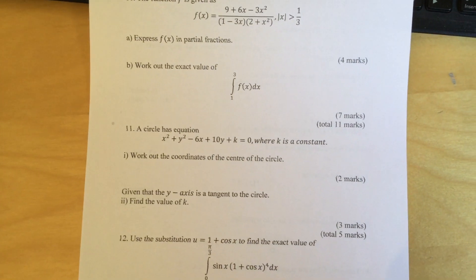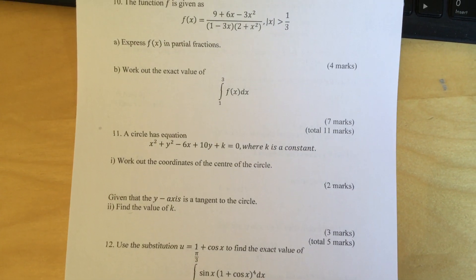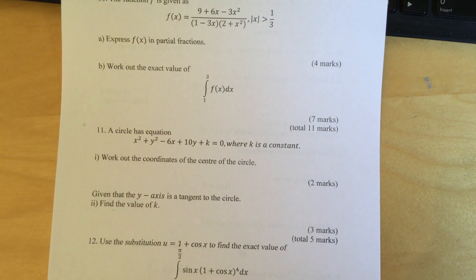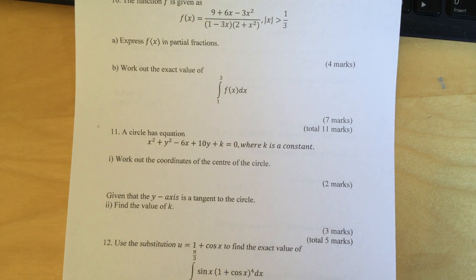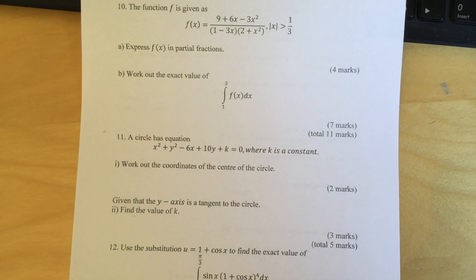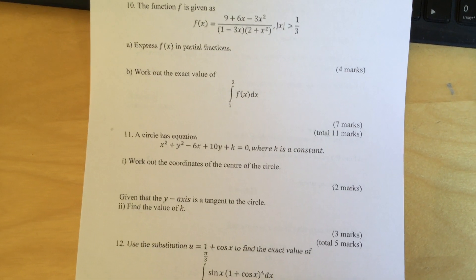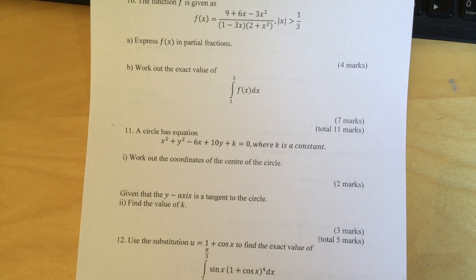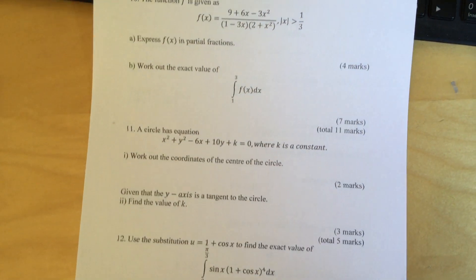Question 11: A circle has the equation x² + y² - 6x + 10y + k = 0, where k is a constant. Part A: Work out the coordinates of the center of the circle. Part B: Given that the y-axis is a tangent to the circle, find the value of k.